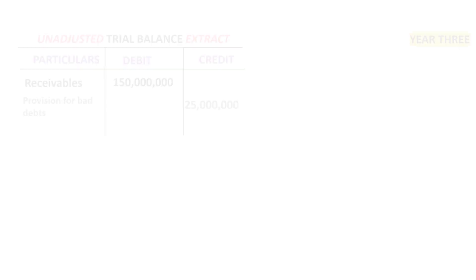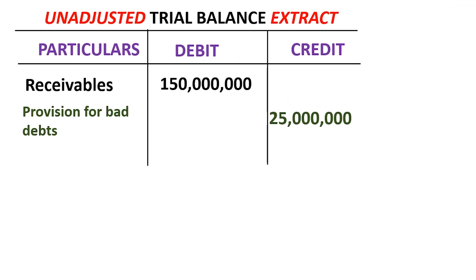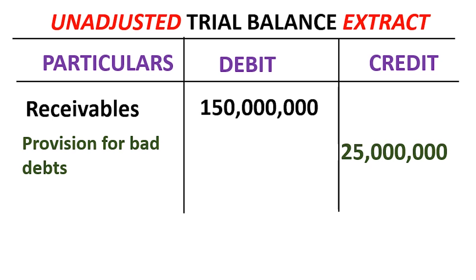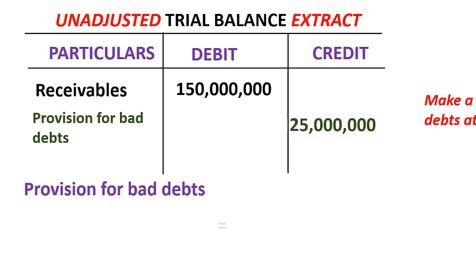Moving to the third year: the trial balance shows provision for bad and doubtful debts of 25 million, carried forward from year two. When it comes to receivables — like any balance sheet item, debtors keep paying and we keep extending credit — at the end of the third year we ended up with receivables of 150 million. We apply 10% provision for bad and doubtful debts on 150 million, which gives us 15 million.